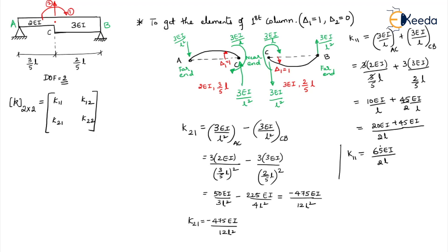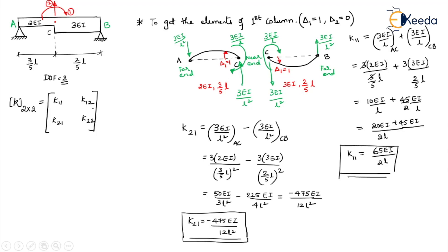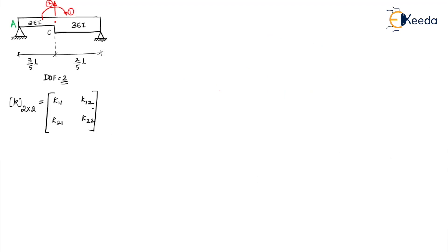So K11 = 65EI/2L is the first column first element, and K21 = −475EI/12L² is the first column second element. Now similarly we need to do for the second column. To get the elements of the second column, we need to apply unit displacement in the direction of the second coordinate, while all other coordinates are zero. So delta 1 = 0 and delta 2 = 1. This is a vertical displacement, so we need to apply unit vertical displacement.